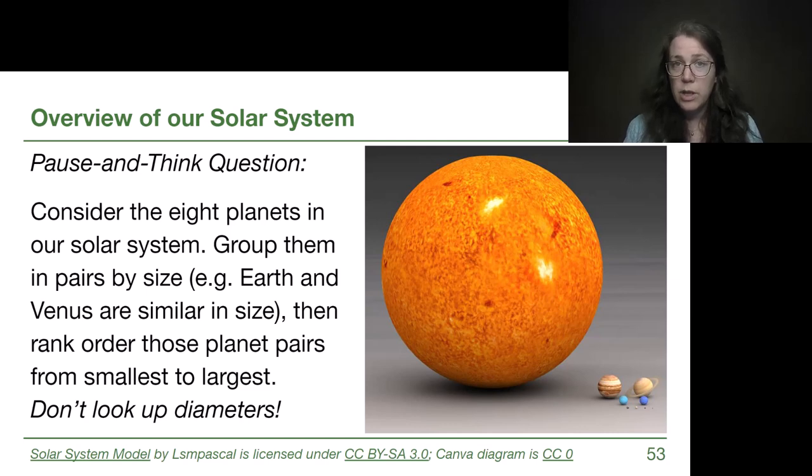I threw a bunch of terms at you and a bunch of objects, our planets. I do want you to take a moment and recognize that one of the things we want to try to do in this class is to have an understanding of relative sizes and scales. I don't want you to look up the diameters of any of these objects. But what I would like you to do is to think about all eight of the planets that I mentioned. I want you to group them into pairs by objects that are approximately the same size as each other. Once you've paired them up, then I want you to put those pairs in order from smallest pair to biggest pair.